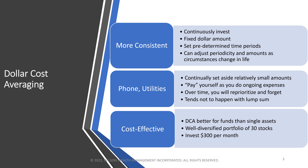Dollar cost averaging — or lump sum investing for small amounts — is better for funds than individual assets because you're buying a well-diversified portfolio already built in. The S&P 500 gives you exposure to 500 different companies. Now, they're all skewed toward large-cap US domestic stocks, so that creates less diversification, but it gives you more than just buying one share of Amazon or Google. So that's a more cost-effective approach.